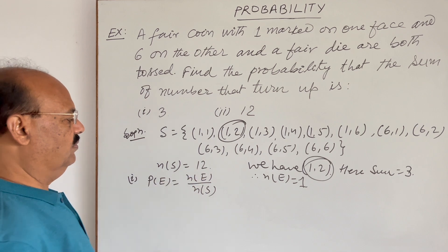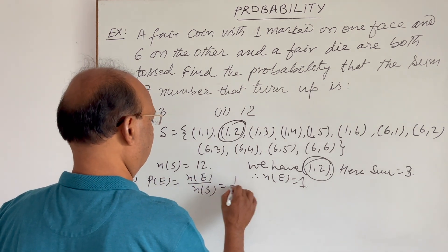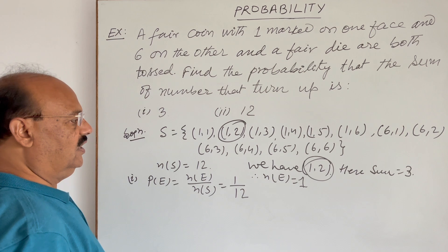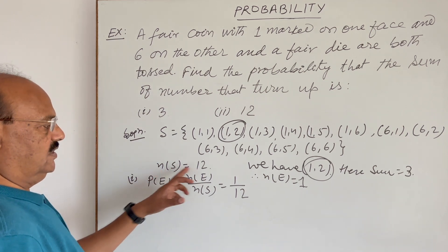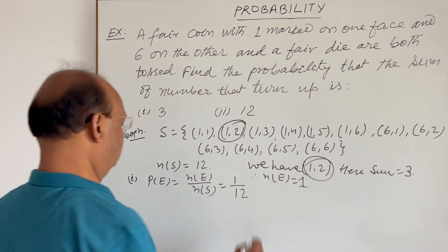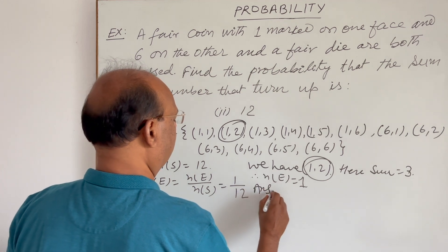So, therefore, P(E) is n(E) by n(S), so this is equal to one by twelve, correct? n(S) is twelve, n(E) is one. So, this is the answer of first part.